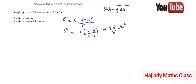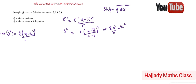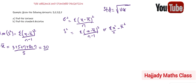For us to do this, the first thing we need to do is calculate x̄, the mean. We've shown how to calculate the mean in our previous video. It is the addition of all values over the number of observations: (3 + 5 + 7 + 8 + 7) divided by 5. This gives us 30 over 5, so our mean is 6.